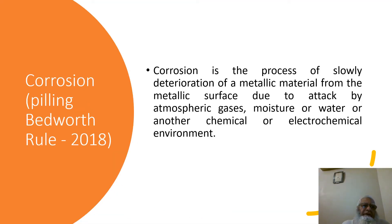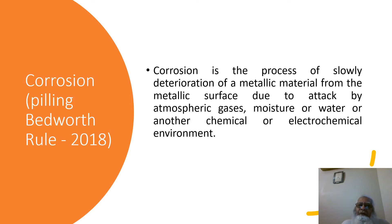This definition is taken from the Pilling-Bedworth Rule 2018, that states corrosion is the process of slowly deterioration of a metallic material from the metallic surface due to attack by atmospheric gases, moisture or water, or another chemical or electrochemical environment.